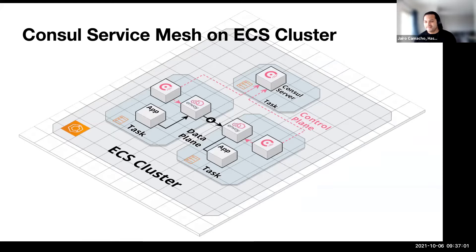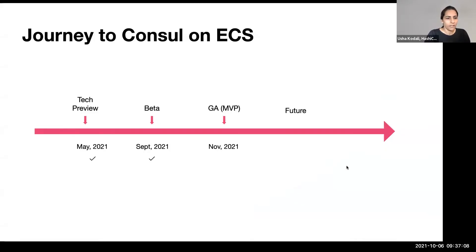Now I'll pass it along to Usha to learn more about what's on the horizon for console on ECS. The journey of console on ECS started with a tech preview in May this year and a recent beta release in September. The tech preview focused on Fargate on ECS and supported a non-secure deployment. With the beta release, we supported both EC2 and Fargate ECS tasks as well as a secure deployment. We are looking forward to releasing general availability this November, and more agile releases in the future.